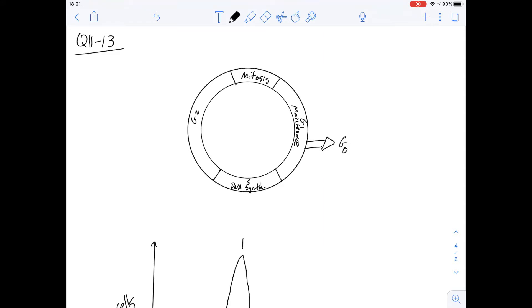So the first thing they show us is this cell cycle diagram which you've probably seen before. It talks about all the different stages, G0 up to G2.